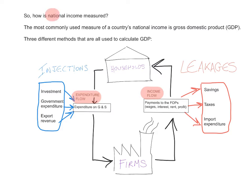How is national income measured? The most commonly used measure of a country's national income is gross domestic product, GDP. There are three different methods that are all used to calculate GDP: one method looks at the expenditure flow, one method looks at the income flow, and one method looks at the output flow.